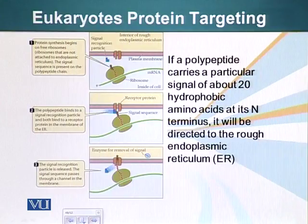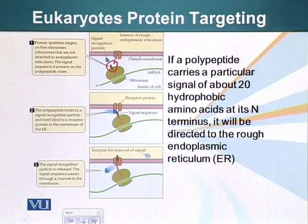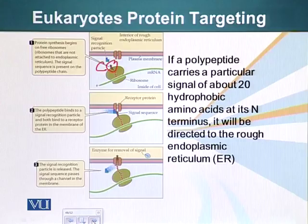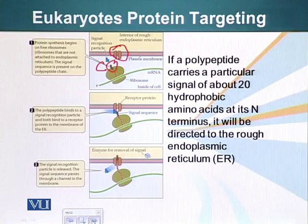Here you can see this process in a little bit more detail. Here we have a ribosome making a protein. Here's the signal sequence. As soon as the signal sequence comes out of the ribosome, it is recognized by the signal recognition particle. It binds the signal sequence, halts the production of that protein, and stops the ribosome from doing translation.